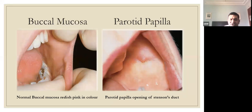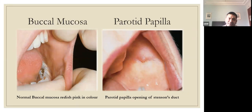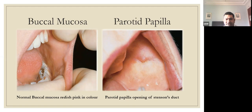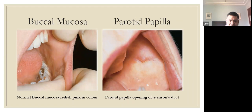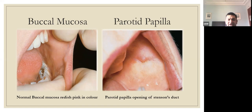Other lip conditions include angioedema, usually associated with allergic reactions, orofacial granulomatosis, and cheilitis glandularis — all possible causes of lip swellings, sometimes associated with systemic conditions. An important finding I should not miss is racial pigmentation on the labial mucosa — a normal physiological melanin pigmentation commonly seen in dark-skinned individuals. This is again a variation of normal.